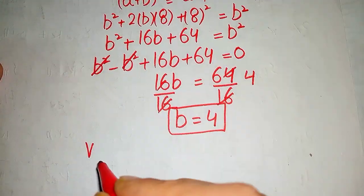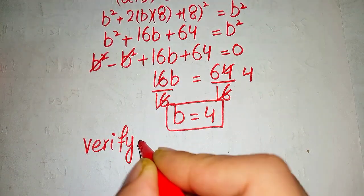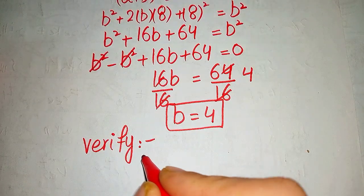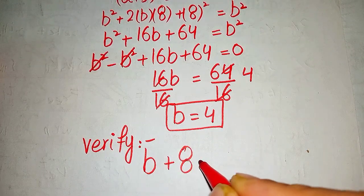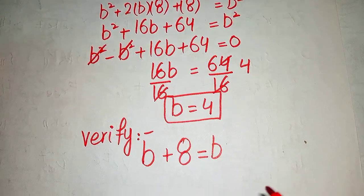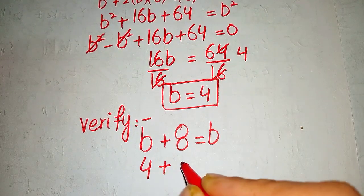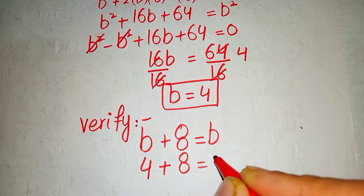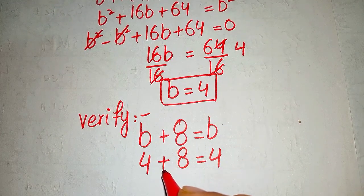So let's put it in our given equation: b plus 8 equals to b. Value of b is 4, so 4 plus 8 equals to 4. And 8 plus 4 would become...